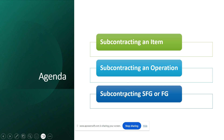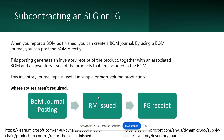Subcontracting an item was explained in part one, and in this part two we will explore how to use the BOM journal. In some manufacturers handling large volumes of items or exceeding capacity, they try to subcontract finished good items directly to their vendors. When you report a BOM as finished you can create a BOM journal — primarily we have a BOM configured in the system but will not perform operations inside our premises, due to reasons like insufficient capacity, planned maintenance, or a sudden upsurge in demand.